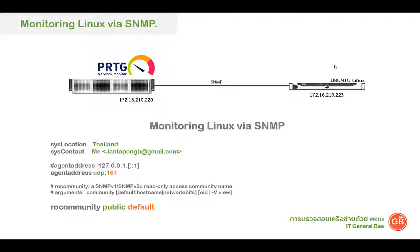เราจะทำการติดตั้ง Service ที่ชื่อว่า SNMPD ลงใน Ubuntu ก่อนนะครับ หลังจากติดตั้งเสร็จแล้วก็จะทำการ config file ที่ชื่อว่า SNMPD.conf โดยแก้ค่าต่าง ๆ ดังนี้ครับ